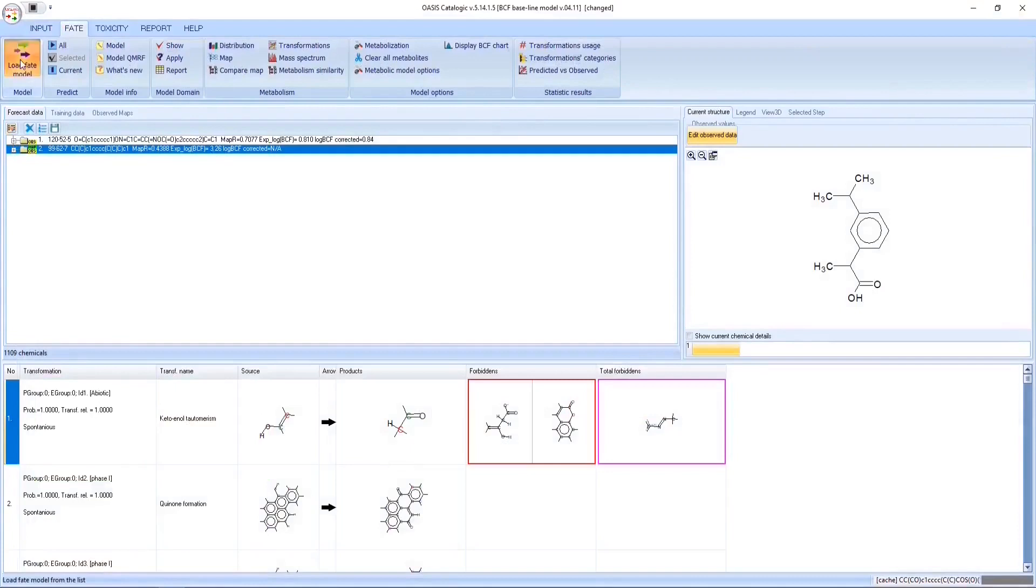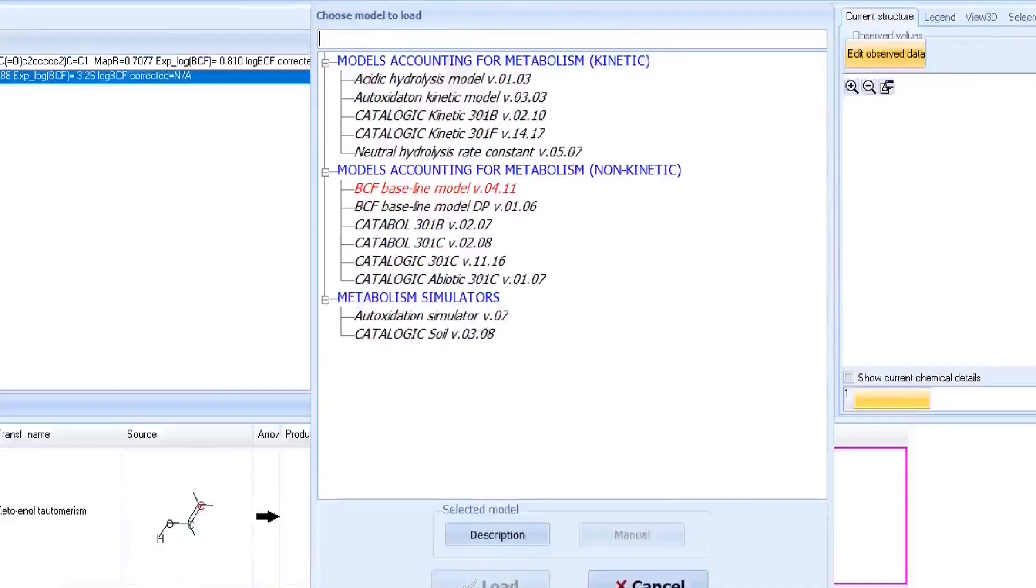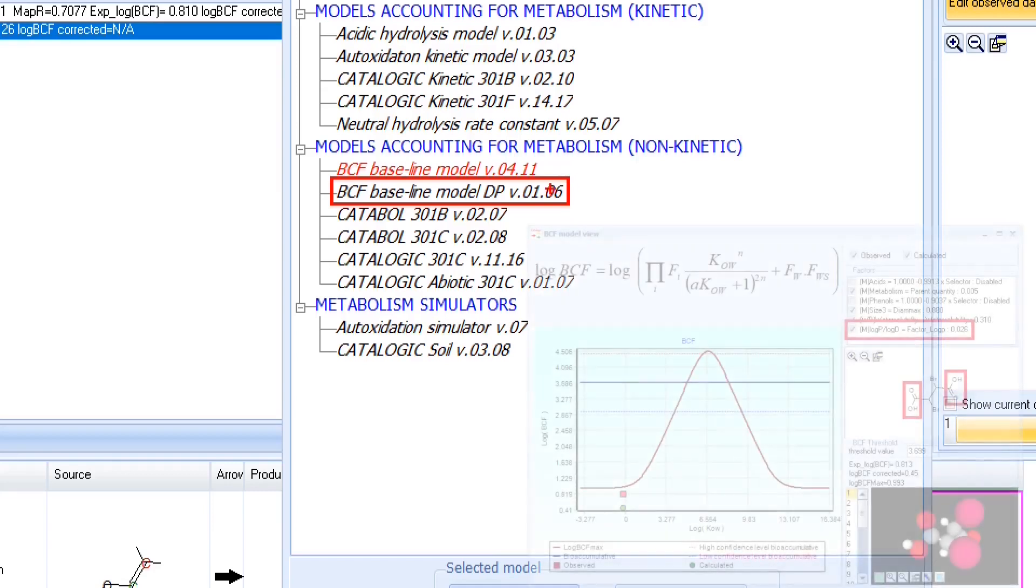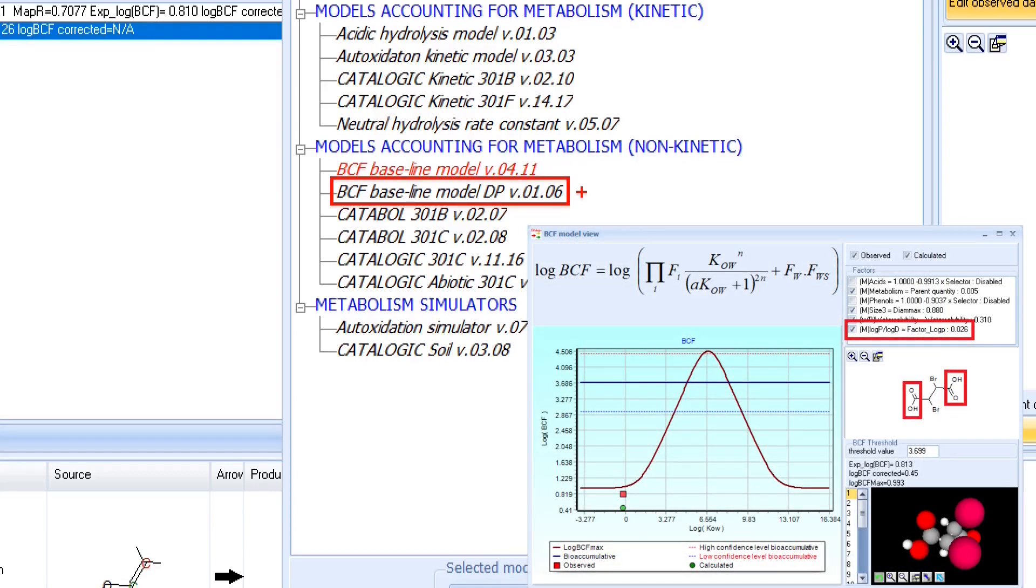Another BCF baseline model, denoted as BCF baseline model DP, is available in CATALOGIC software. This model differs from the previous one with the way the ionization factor is evaluated. In the BCF baseline model, ionization is accounted empirically with absence or presence of ionizing fragments. While in the BCF baseline model DP, the effect of ionization is assessed based on the ratio between partitioning coefficient, log P, and distribution coefficient, log D.